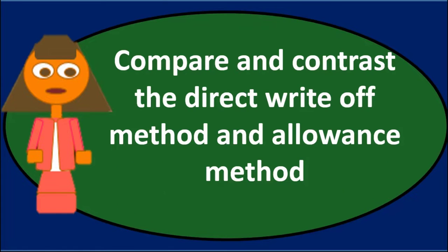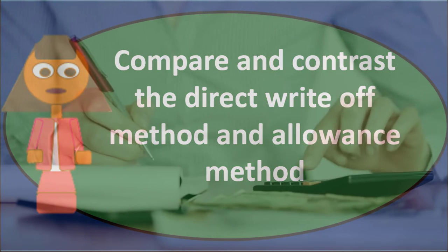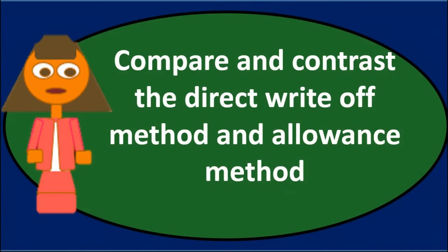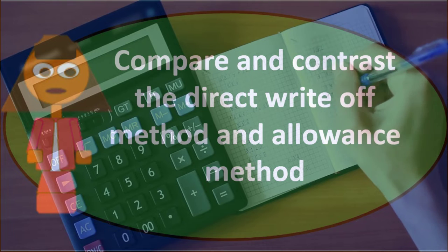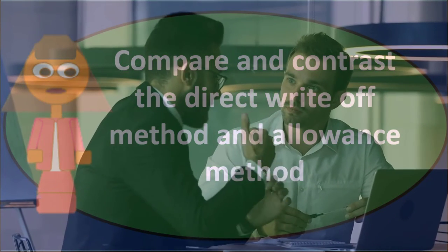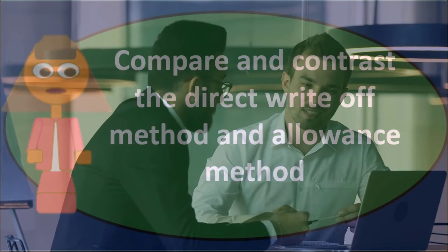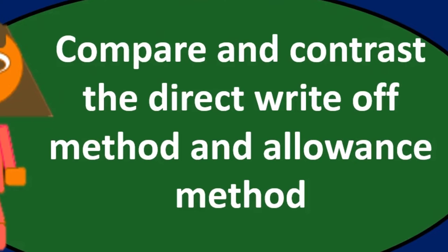On the income statement side, the same issue applies. If we record a hundred thousand in revenue but never collect the money, it is not really a complete sale. We need to record bad debt related to those sales and make some estimate for both the balance sheet and income statement sides — telling readers how much of accounts receivable is uncollectible and how much of this period's sales we don't expect to ever be paid on.